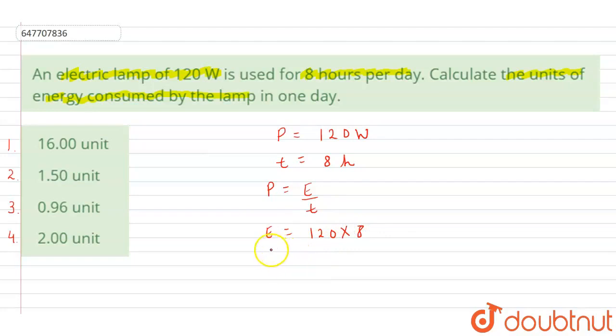12 into 8 is 96. So, it means energy is how much? 960 Joule.